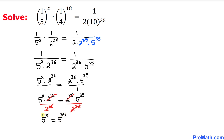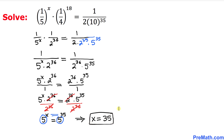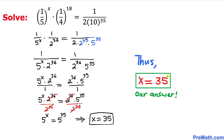Now we can see that our bases are the same. Since the bases are equal, we can equate the exponents, so x equals 35. That's our final answer. Thanks for watching, and please don't forget to subscribe to my channel for more exciting videos.